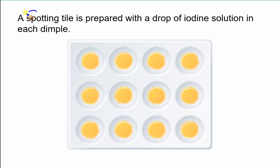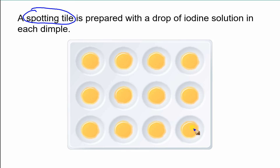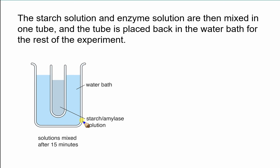What we've got here is a spotting tile, which is used in experiments like this. We can place in each one of these dimples some iodine — you can see the iodine is a yellowy colour in this tile. After 15 minutes we're going to mix the starch and the enzyme together, so we're hoping that the enzyme will start digesting the starch.